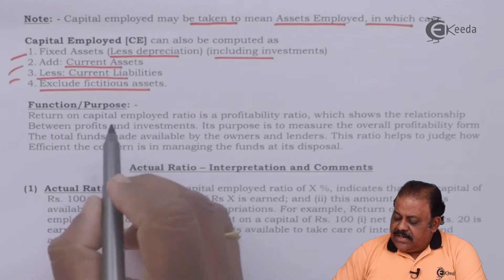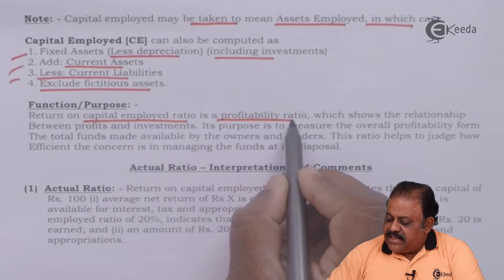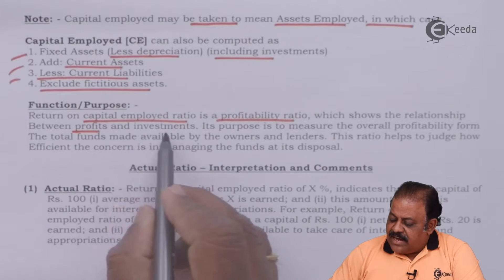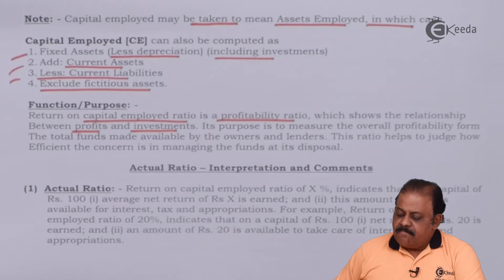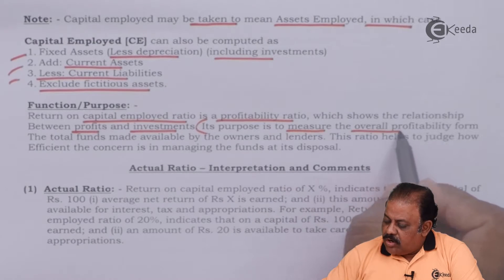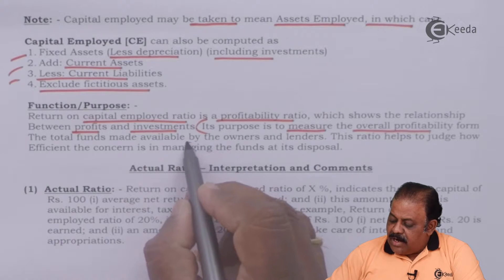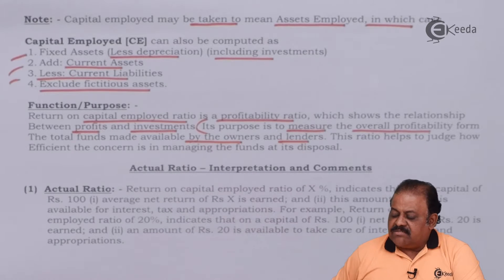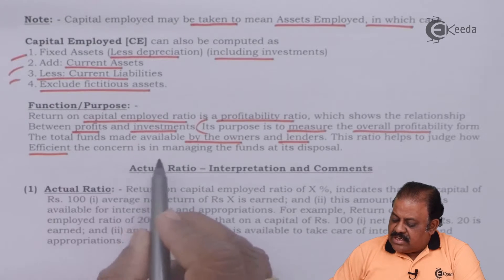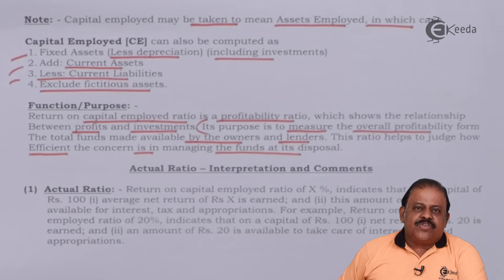Functions and purpose: Return on capital employed ratio is a profitability ratio. It shows the relationship between profits and investments. Its purpose is to measure the overall profitability from the total funds made available by the owners and the lenders. This ratio helps to judge how efficient the concern is in managing the funds at its disposal.